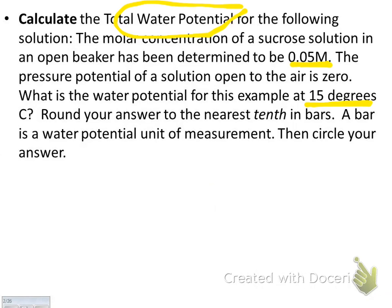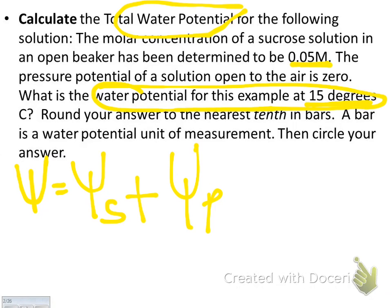So the two formulas on your formula sheet are the total water potential equals the solute potential plus the pressure potential. Well the problem tells you that the water potential, that's what you're calculating. But it tells you that the pressure potential right here is zero. So this number is zero. So all you're looking for, the total pressure is equal to the solute pressure.